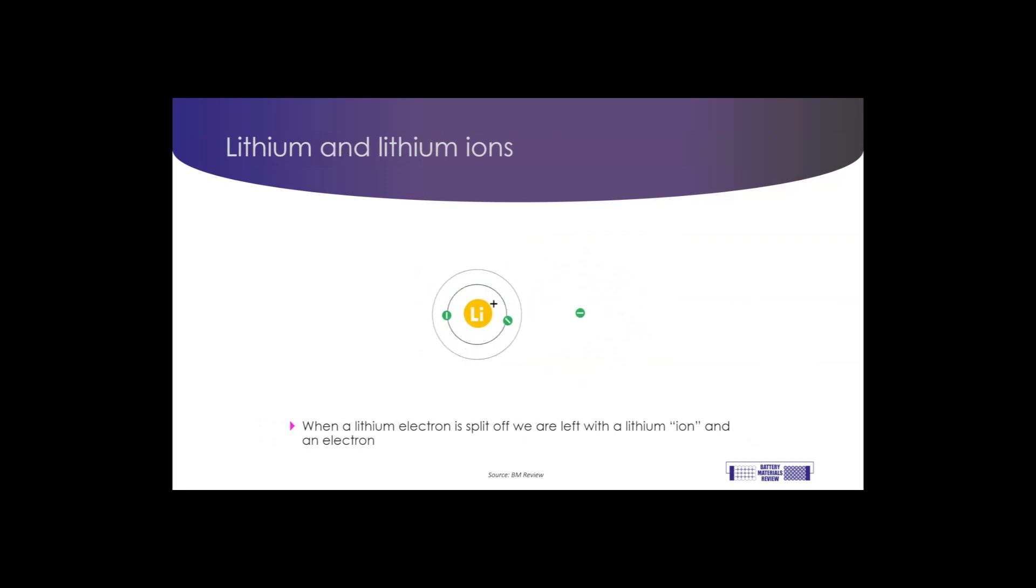Now, the electron holds a negative charge, so when it splits off, it leaves a net positively charged lithium particle, which we call an ion, as well as the separate negatively charged electron. And this is the basis for the reaction which happens in a lithium ion battery cell.